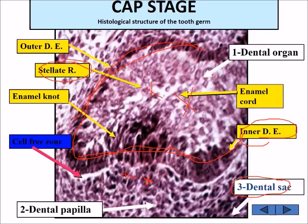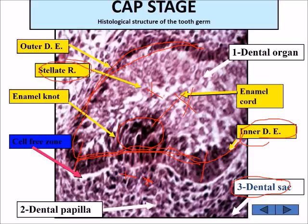The enamel organ is composed of the outer enamel epithelium, inner enamel epithelium, and centrally located stellate reticulum. Together with the dental papilla and dental sac, these three structures form the tooth germ. In the early cap stage, the inner enamel epithelial cells are slightly straight or concave facing the dental papilla. A condensed group of epithelial cells called the enamel knot acts as a signaling center. The enamel cord is an extension of epithelial cells from the inner enamel epithelium to the outer enamel epithelium — both are transient structures seen during development.